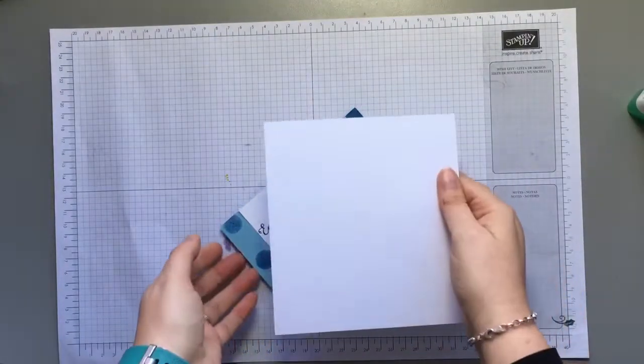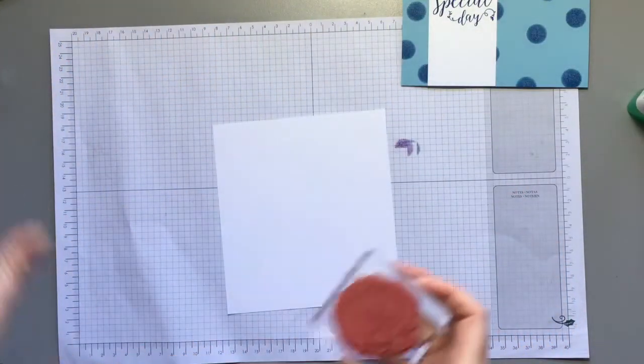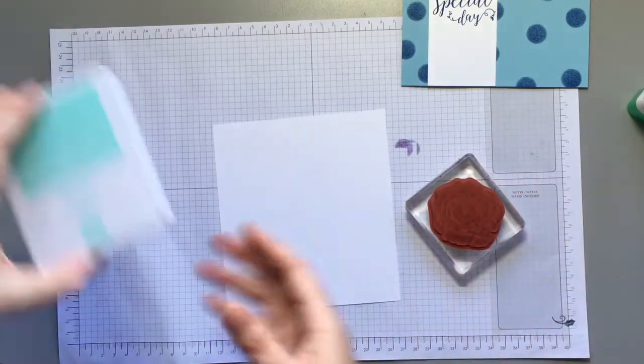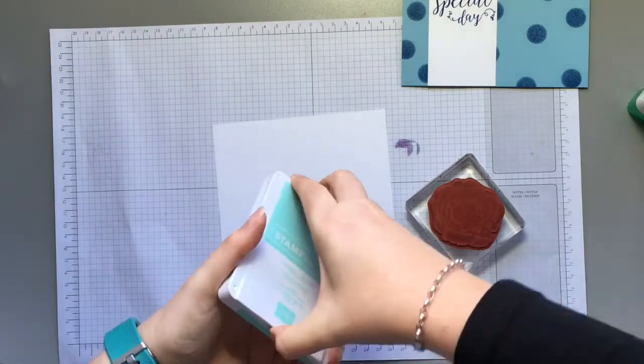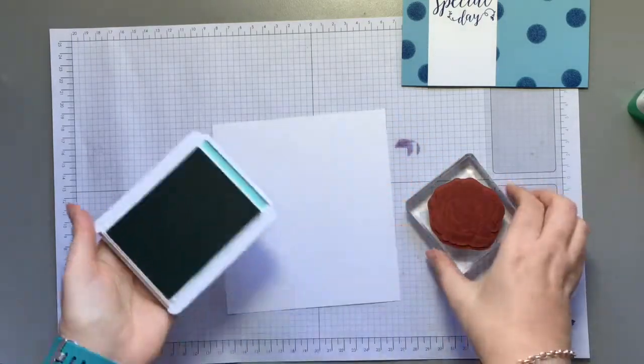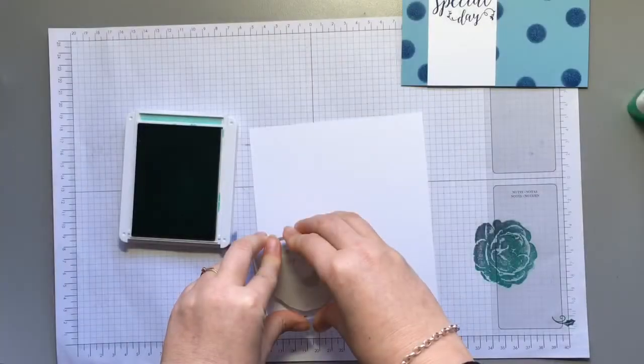Now to make the flower I'm grabbing some scrap Whisper White, the flower image and Coastal Cabana. The flower image from the Healing Hugs set.